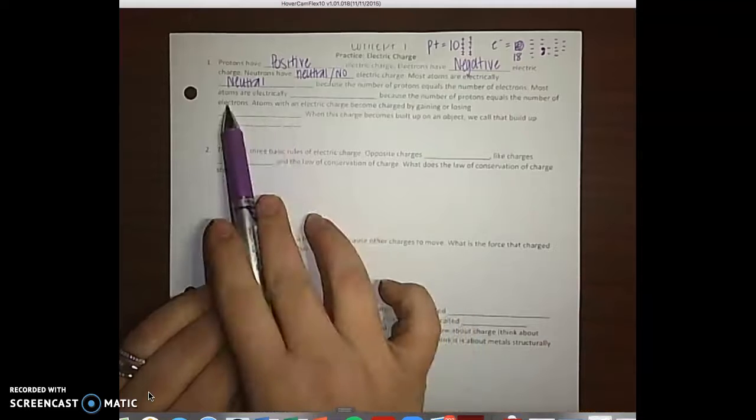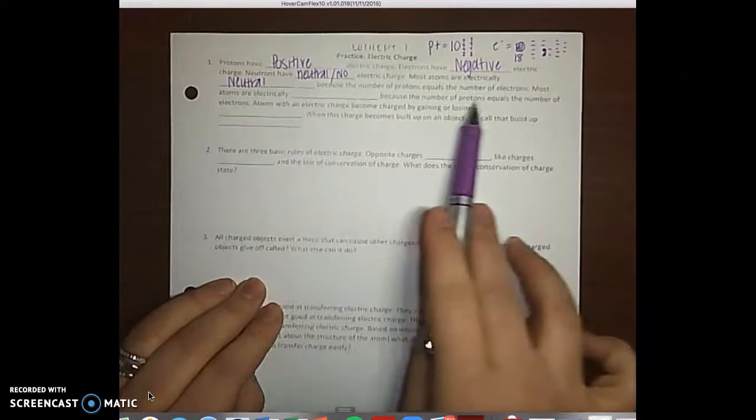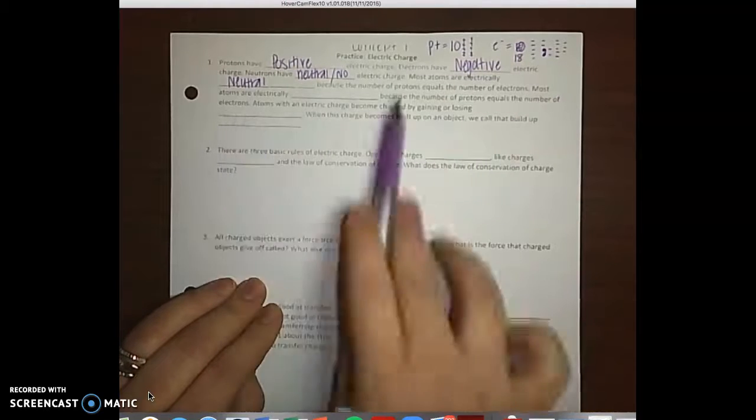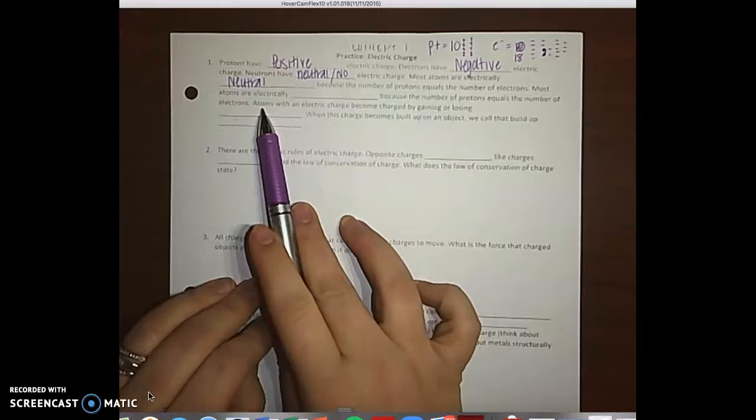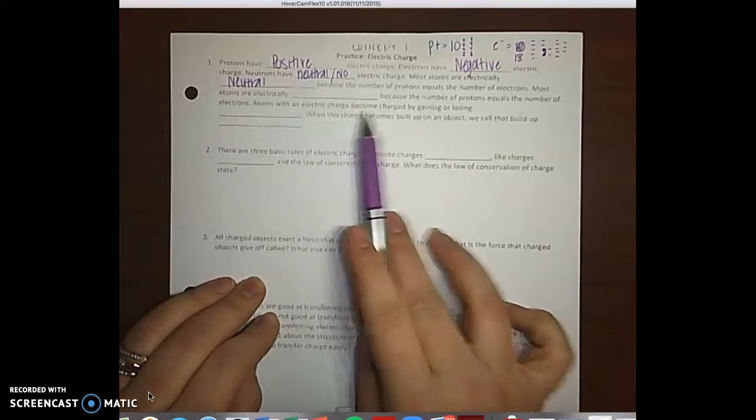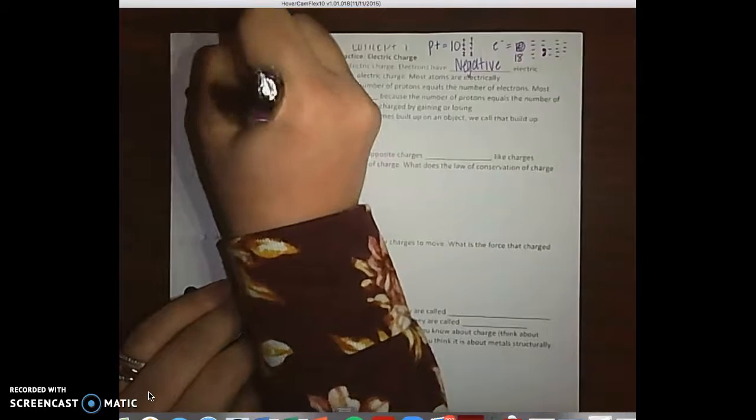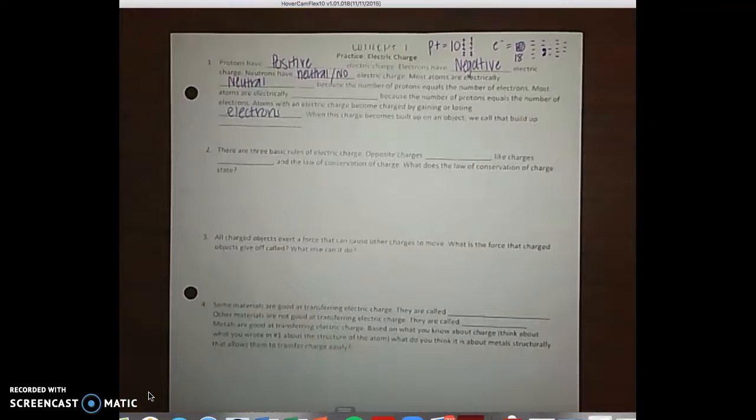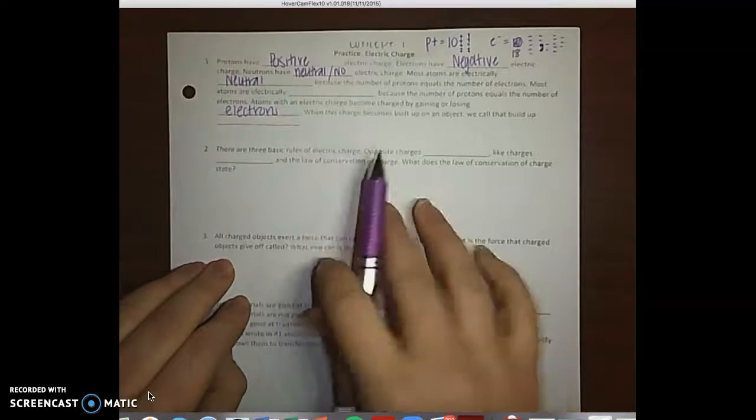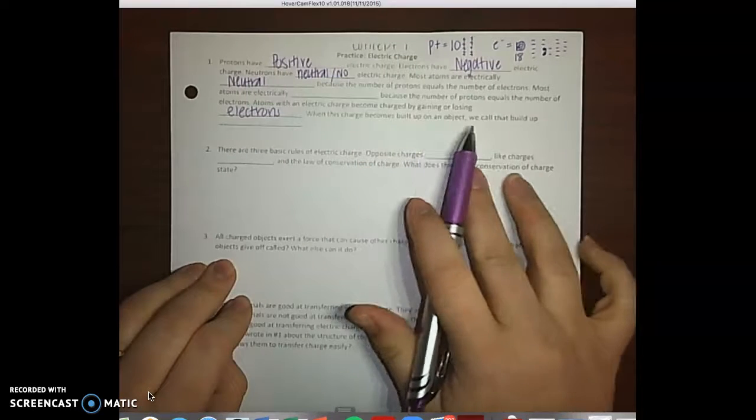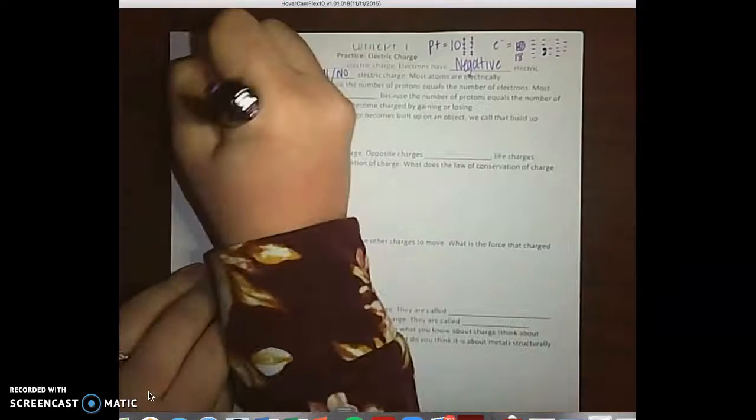Most atoms are electrically neutral because the number of protons equal the number of electrons. Atoms with an electric charge become charged by gaining or losing electrons. We know that atoms share or gain electrons or give away electrons and that gives them their charge. When this charge becomes built up on an object we call that buildup static electricity.